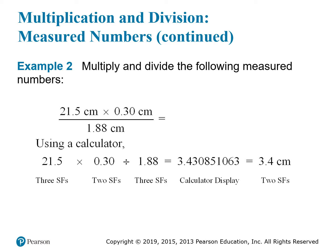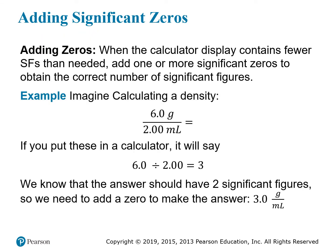We can use the same rule even with more than 2 measured numbers. In this case, 21.5 has 3 significant figures, 0.30 has 2 significant figures, and 1.88 has 3 significant figures. The fewest significant figures is 2, so the final answer will only have 2 significant figures. As long as the only operations involved are multiplication and division, you can use this rule. On some occasions, a calculator will actually show fewer digits than we know we need based on these rules. When that happens, we need to add significant zeros to the answer so that it has the correct precision. In this example, the two measured numbers happen to give a result that appears to be an integer, but based on the rule for significant figures, we know it should have 2 digits because 6.0 has 2 significant figures, so we have to add an extra 0 to make the answer 3.0.